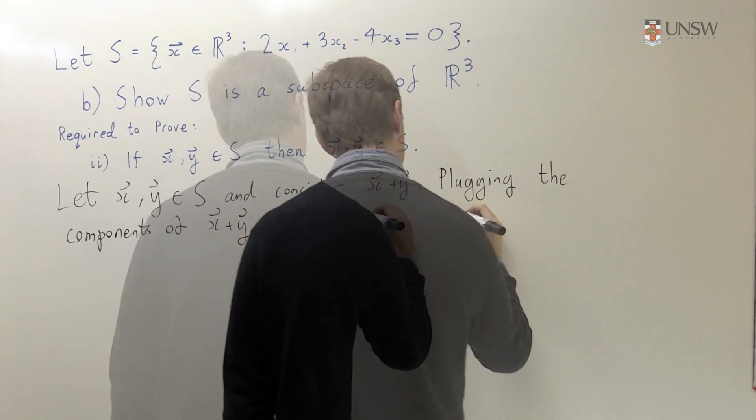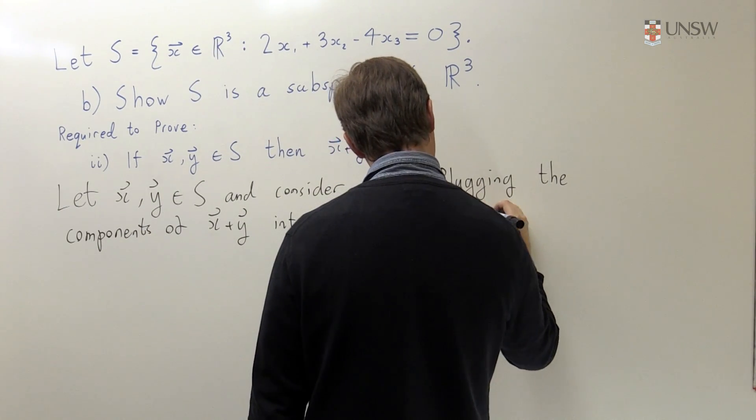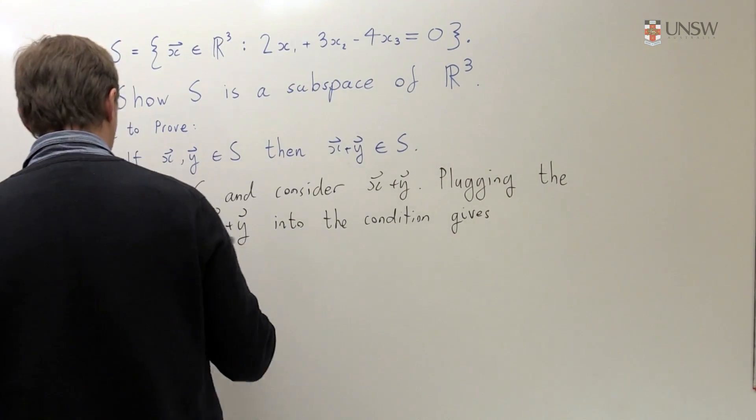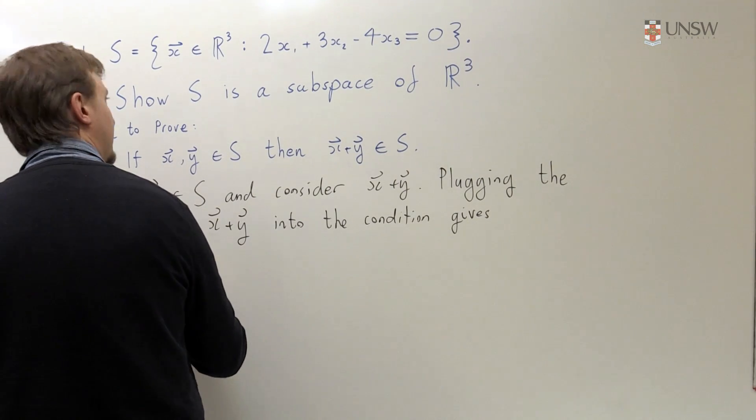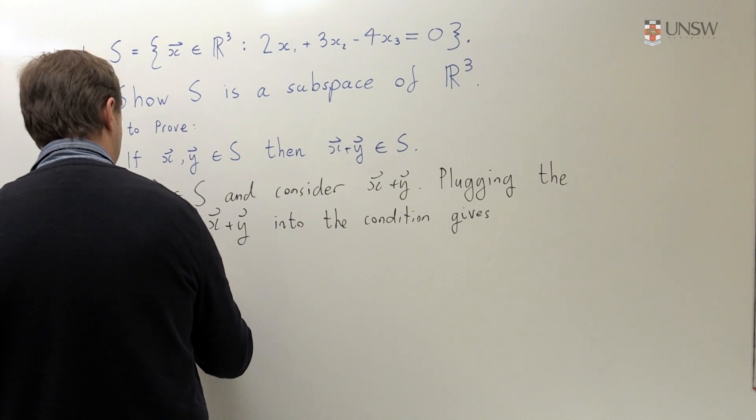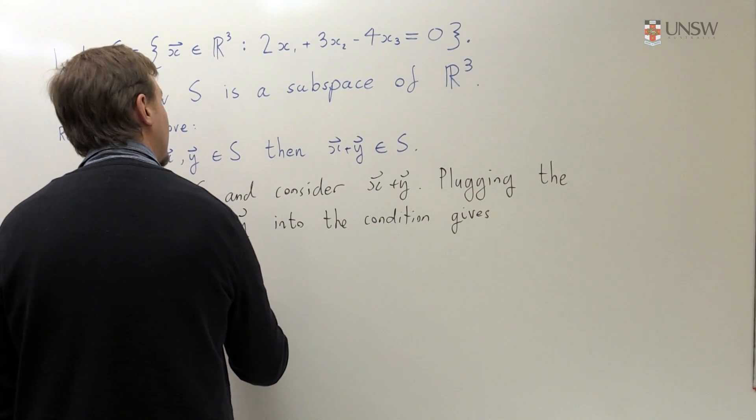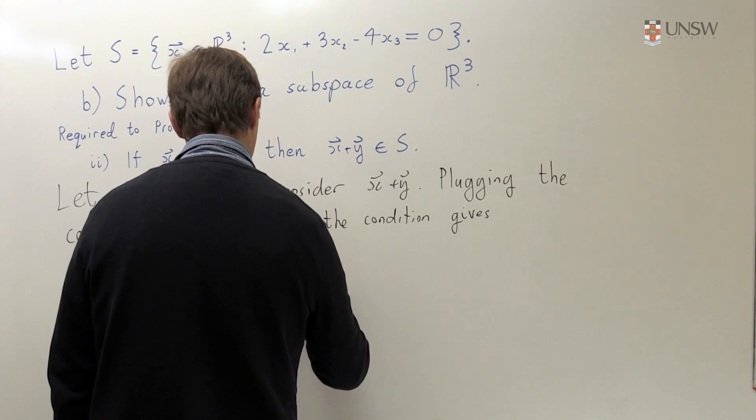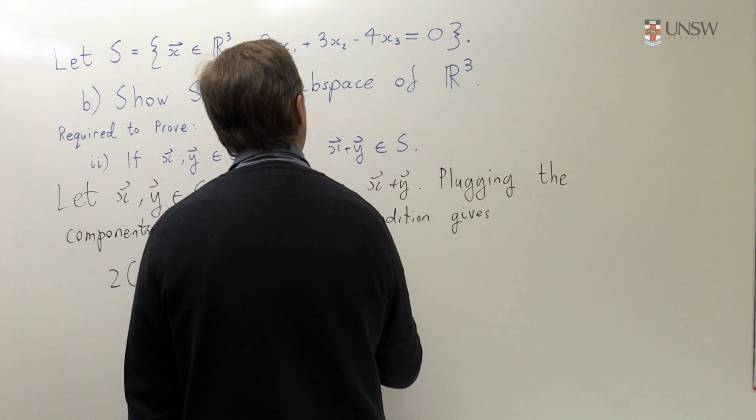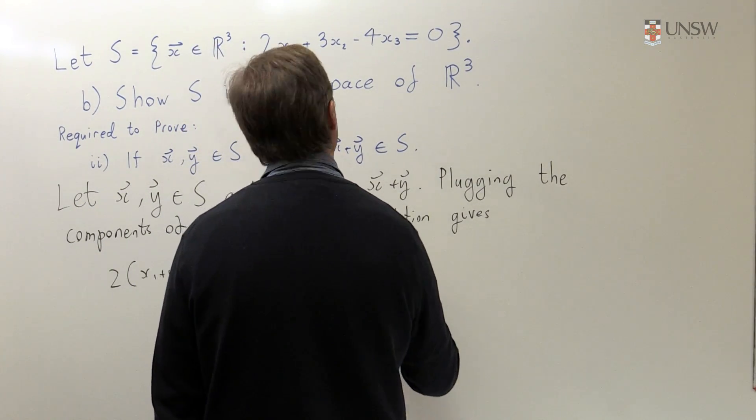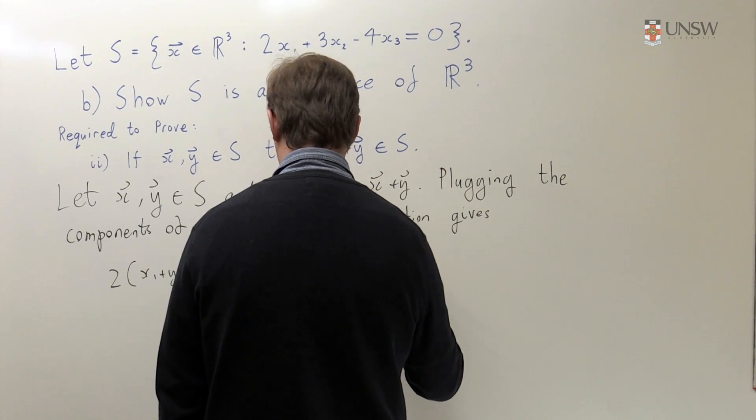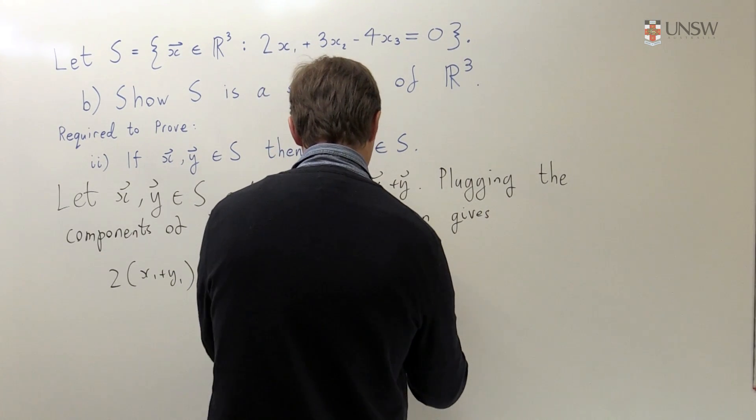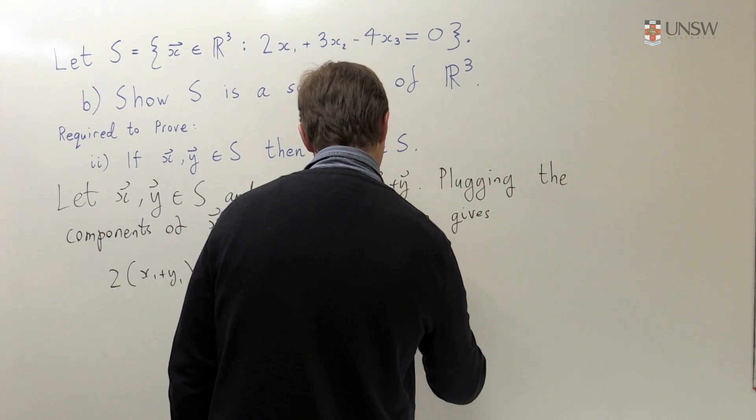So let's have a look at this condition. So let's plug the components of X plus Y into that condition and see what happens. So plugging the components of X plus Y into the condition gives, well, it gives you 2 times (X1 + Y1) plus 3 times (X2 + Y2) minus 4 times (X3 + Y3).